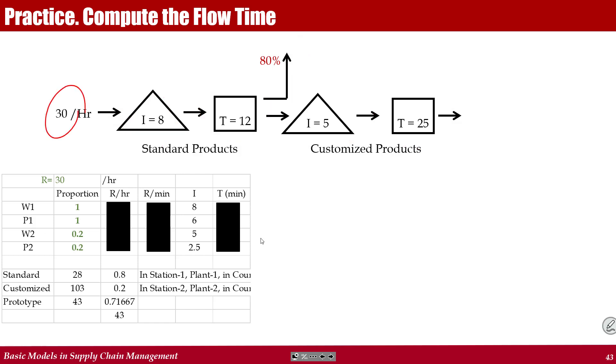30 flow units per hour come in. But in the time period, as long as we are consistent in time period, 100% of them go through first waiting line and first process. But only 20% of them go through the second waiting line and second process. We want to compute the flow time.